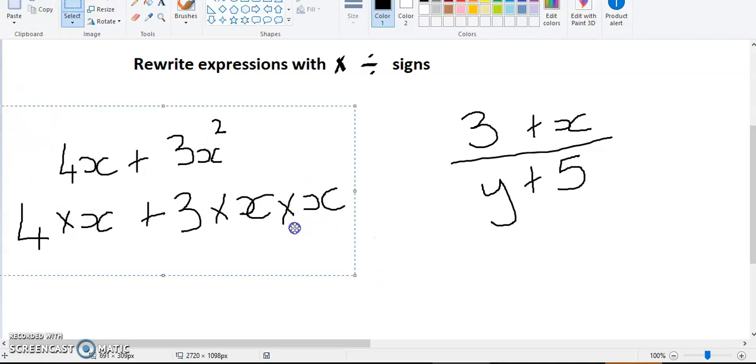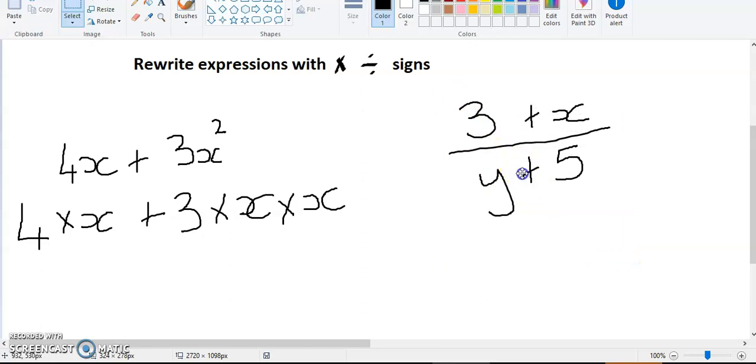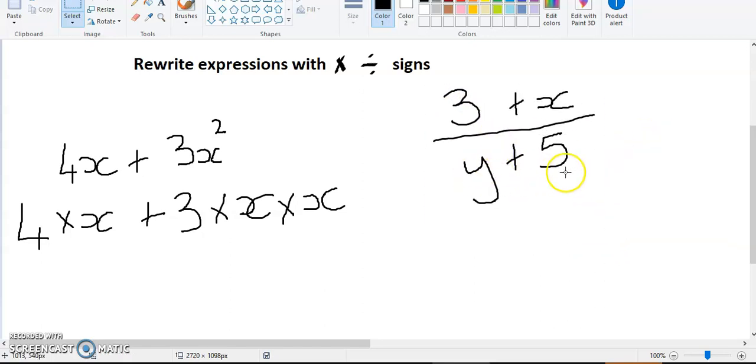It's a different story when we get to our second question which is 3 plus x divided by y plus 5. Now because everything on the top is being divided by everything on the bottom, we have to do everything on the numerator first and everything on the denominator first.